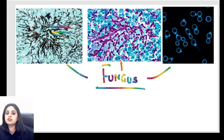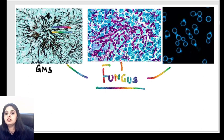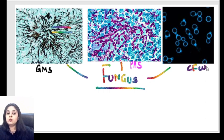So these were the three stains. Quick recap: the black one is Gomory's methenamine silver stain, the pink one is the PAS stain, and the fluorescent one is calcofluor white. That is done — let's move on to the next spotter.